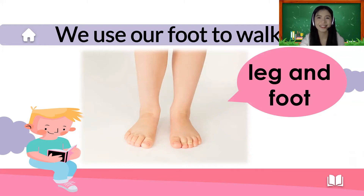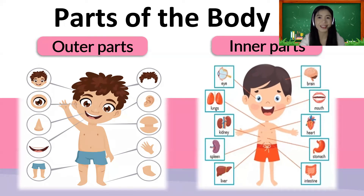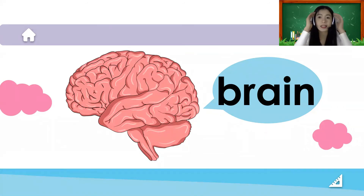And two legs. Those were the outer parts of our body — the ones that we can see with our eyes. Now let's move on to the inner parts. These include the organs inside our body; we cannot see them. Let's start with the brain. The brain is located inside our head.